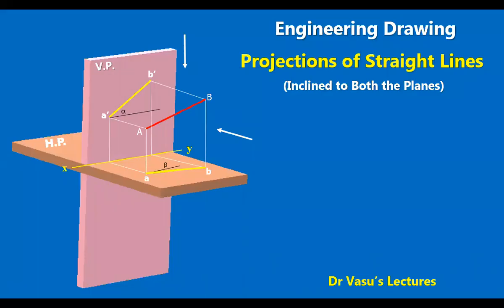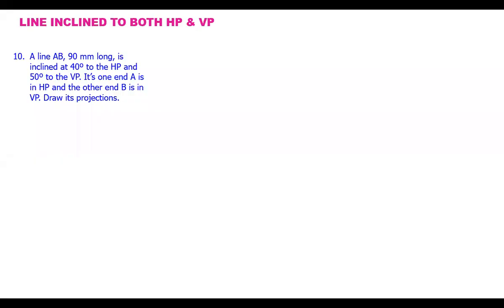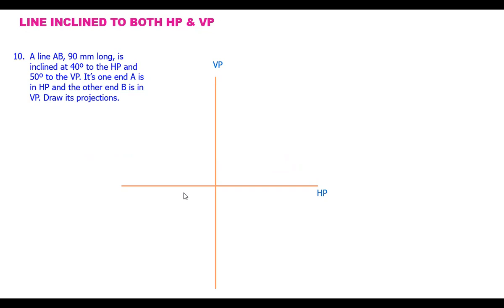Hi, welcome back to Engineering Drawing. I am your Dr. Vasu. We are going to see a very typical problem in the line inclined to both the planes and we see a different concept here. Suppose one line is in the plane which is perpendicular to both HP and VP — it is called a profile plane.